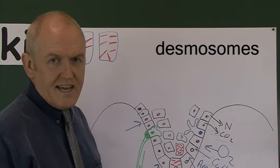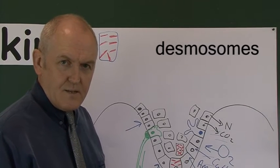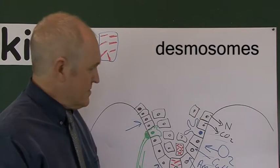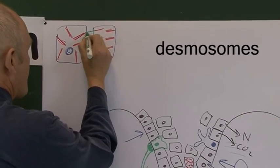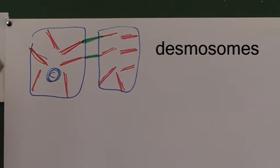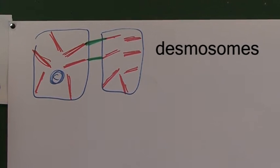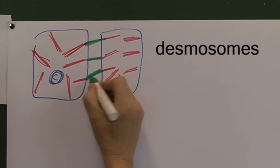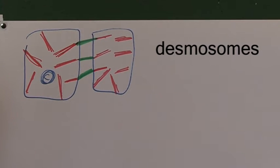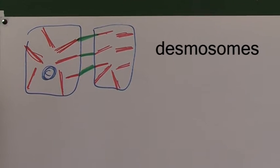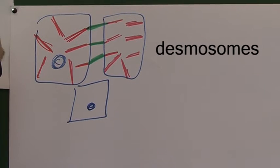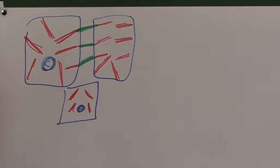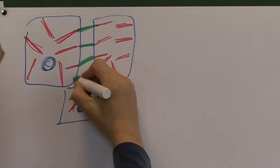The tonofilaments are intracellular — inside the cell — and the desmosomes are intercellular — between the cells. The tonofilaments and desmosomes connect adjacent cells. An adjacent cell also contains tonofilaments, and is connected to the next cell via desmosomes, with the protein structures running from one cell through to the next.